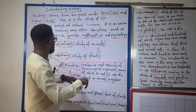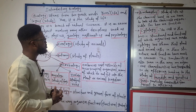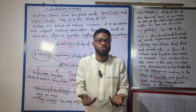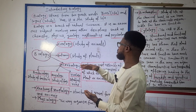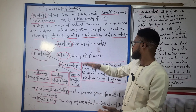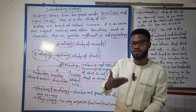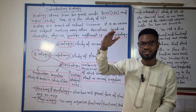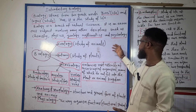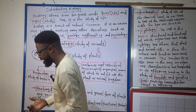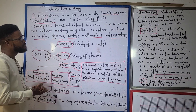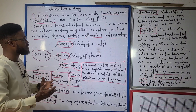Geology comes in since we are on this earth and must study our environment. Mathematics — it would surprise you — when you want to create your scales, like for a thermometer with its upper and lower fixed points, you need a good knowledge of mathematics. Then psychology — you want to look at your interactions with other living things and even non-living things. So biology is a natural science and indeed a subject involving many other disciplines.